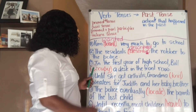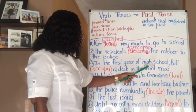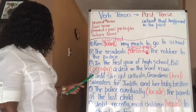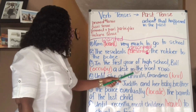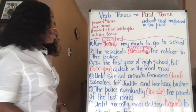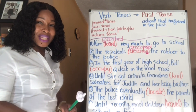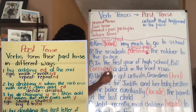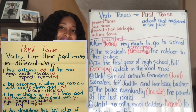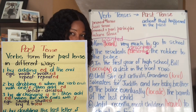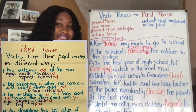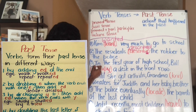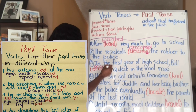Number three: 'In the first year of high school, Bill occupy a desk in the front row.' The verb is 'occupy' — it ends with Y. What do we do with the Y? Change it to I, then add ED. So 'occupy' becomes O-C-C-U-P, change the Y to I, then add ED — 'occupied.'